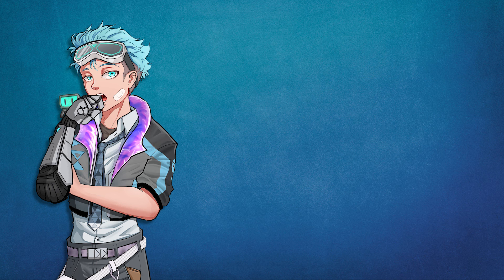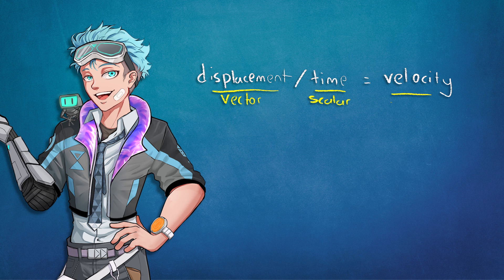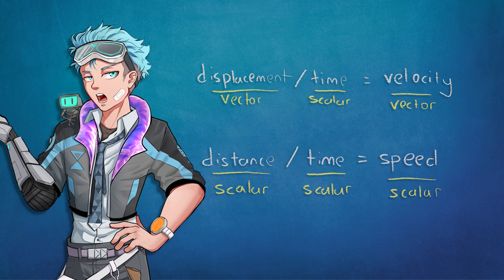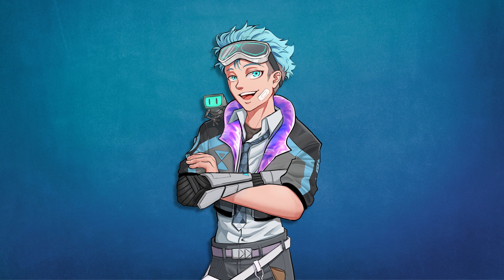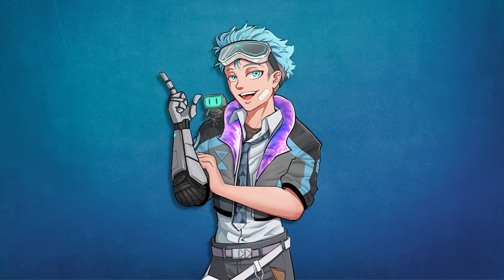The moment you multiply any amount of scalar with a vector, the result will always be a vector. Time is a scalar, but displacement is a vector, so velocity is a vector. Distance isn't a vector, so neither is speed. Why use speed at all, then? It's because sometimes you wouldn't care where an object is going, only how fast. When calculating fuel consumption, you care about how much distance your car has traveled, not its displacement — your rate of fuel consumption is tied to the car's speed, not its velocity.